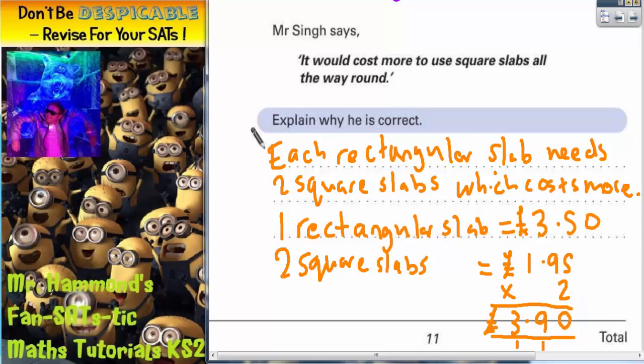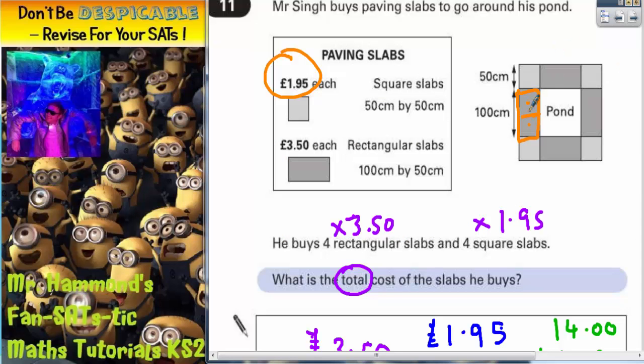And that has shown it. You could actually just go back to the diagram and actually draw on, pointing to the two square slabs, saying that that's £3.90, whereas one rectangular slab was £3.50. And that shows that it would be more. Because for every two square slabs that you use, it's costing you 40 pence more.